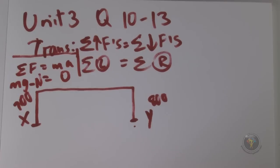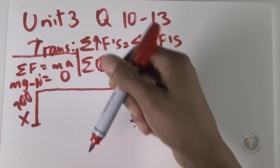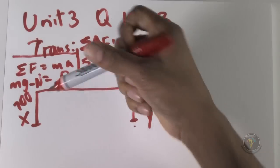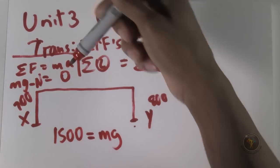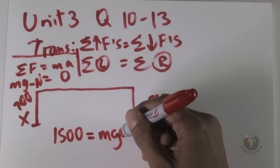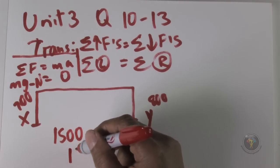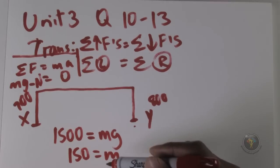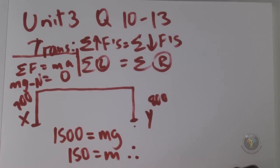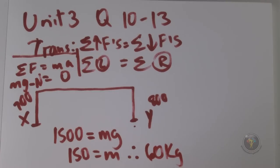For question 11, we know the total force down is 1500 newtons, which equals the weight mg. With g equal to 10 meters per second squared, the total mass is 150 kilograms. Since the bed and bedding is 90 kilograms, the mass of the patient must be 60 kilograms — answer choice B.